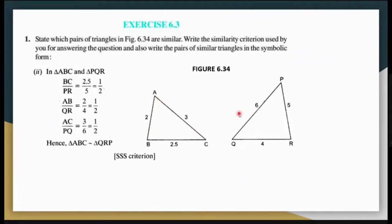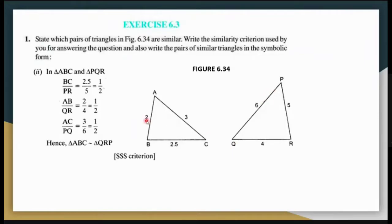I want to prove triangle ABC similar to triangle PQR. I will observe that three sides are given for each triangle. Let me check the ratio of the sides. AB is 2, QR is 4; BC is 2.5, RP is 5 centimeters; CA is 3, QP is 6. Therefore, the ratio of AB to QR is 1:2, ratio of BC to RP is 1:2, and ratio of CA to PQ is 1:2.